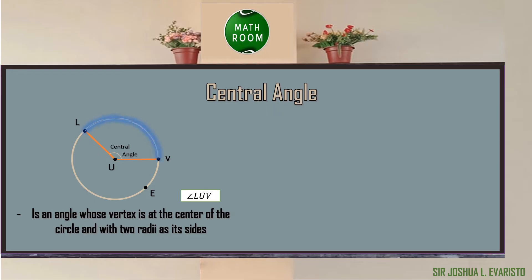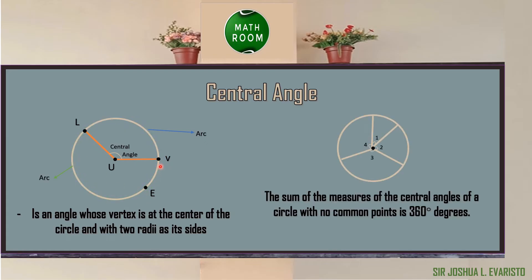The first arc is the minor arc, which is arc LV. The second arc contains point E, which is arc LEV. Also, the sum of the measures of the central angles of a circle with no common points is 360 degrees. In the given figure, the measurements of angle 1, angle 2, angle 3, and angle 4 together are equal to 360 degrees. Note that all measures of angles and arcs are in degrees.